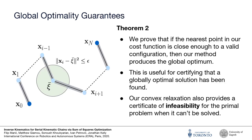Theorem 2 in our paper describes conditions which, when met, guarantee that our convex relaxation produces a global optimum of the original non-convex QCQP. Essentially, the theorem establishes the existence of a ball of finite radius surrounding feasible configurations, within which nearest point parameters xi produce a tight convex relaxation. This allows us to guarantee that a global optimum can be found and certified in many cases. We also note that when convex relaxations are infeasible, they produce a certificate of infeasibility for the original problem, which is useful for identifying unreachable end-effector goals.